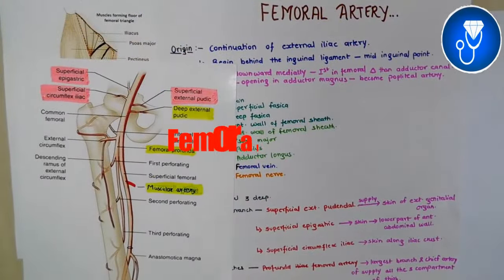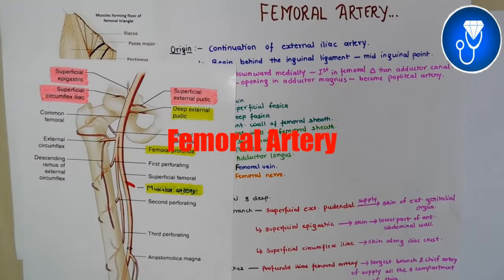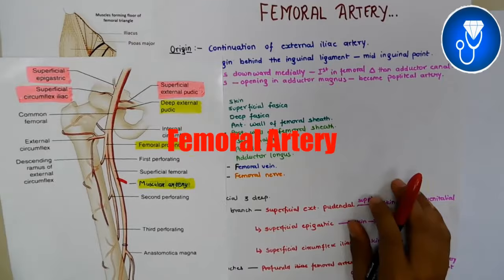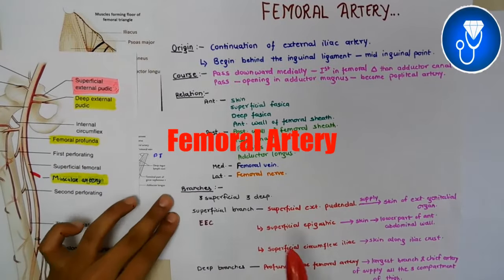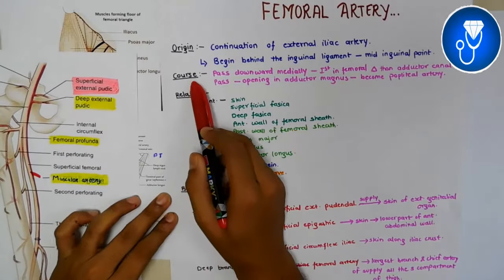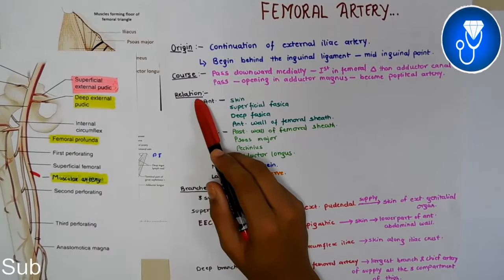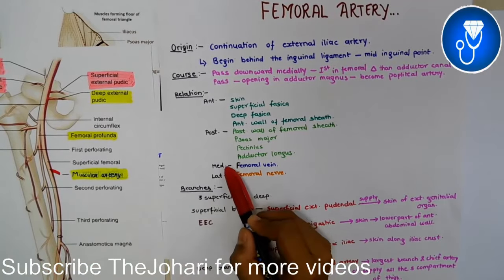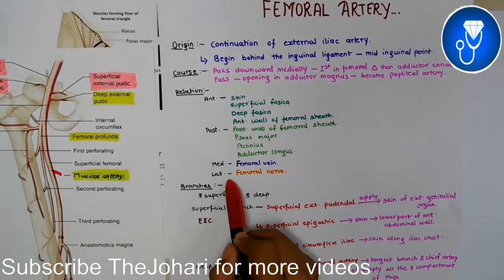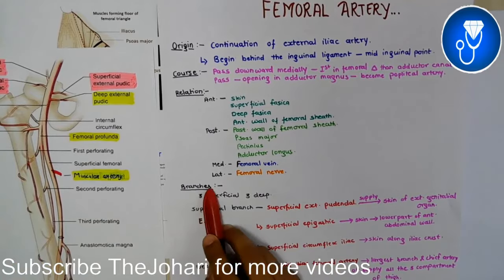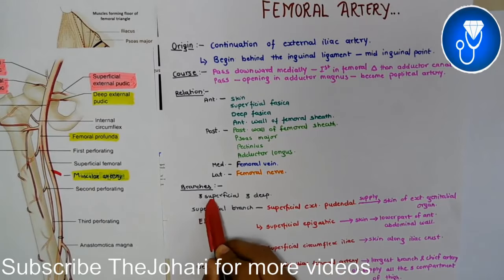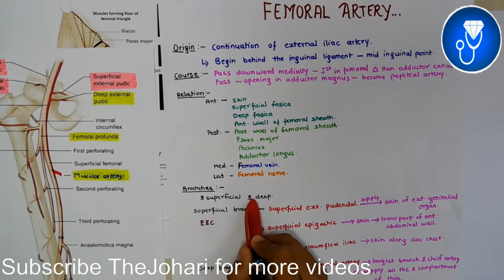Hello guys, today's topic is the femoral artery, which is written in university exams. Today we will see the origin of the femoral artery, its course and path, its anterior, posterior, lateral and medial relations, and then its branches. The femoral artery gives six branches: three superficial branches and three deep branches.